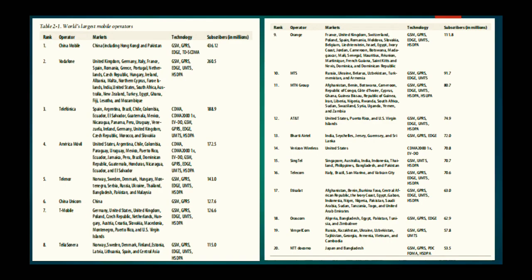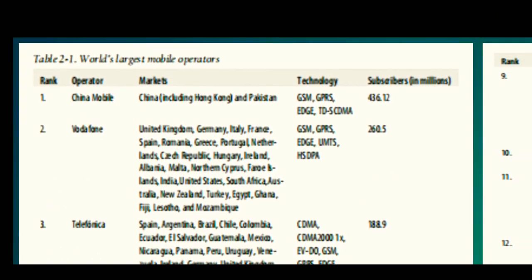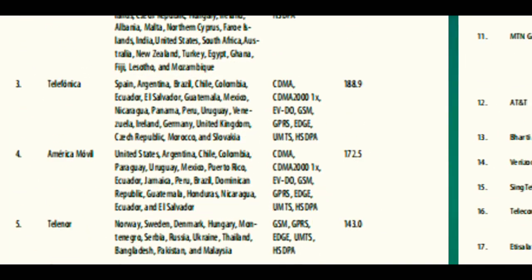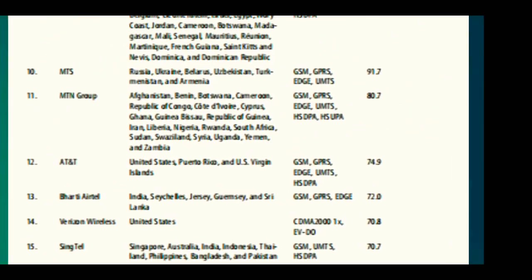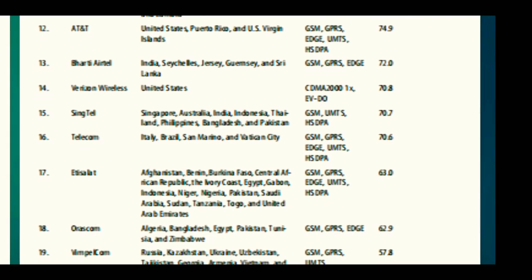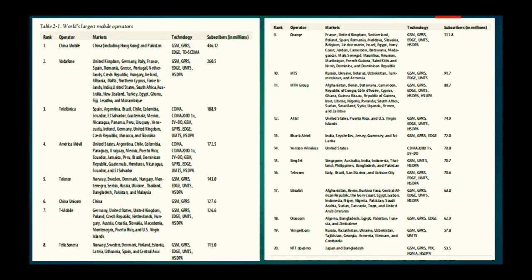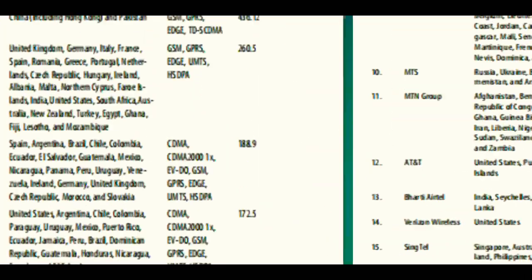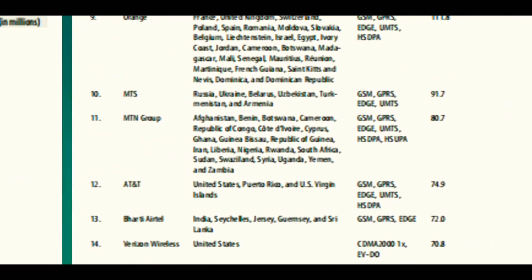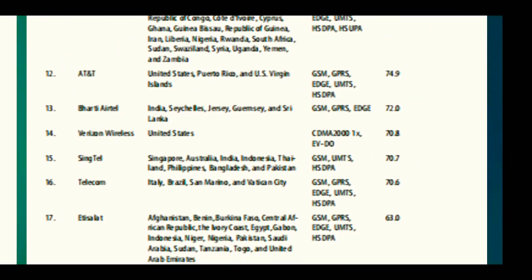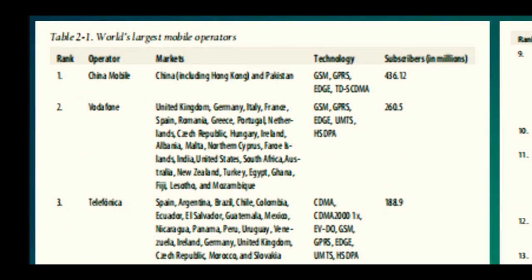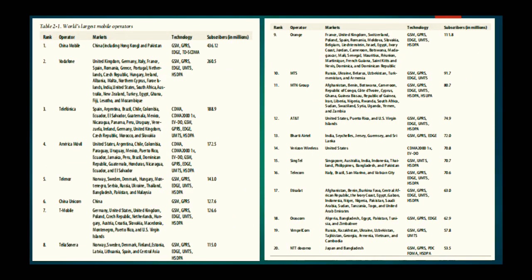Before going to the next layer, let us look at the world's largest mobile operators. The image is a bit blurry, but the listed operators include China Mobile, Vodafone, Telenor, MTS, Orange, and Bharti Airtel, which operates in India, Jersey, Germany, and Sri Lanka, providing GSM and GPRS services. This list also shows their markets, technology, and number of subscribers.